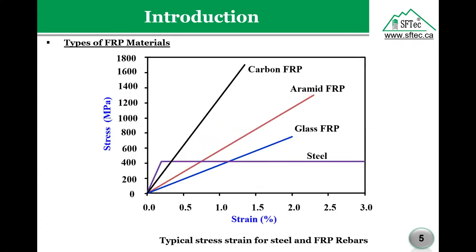The different types of FRP and how they compare to steel — we have glass, aramid, carbon, and basalt, though the three main popular fibers are glass, aramid, and carbon. Comparing them to steel, you will notice two things: glass, being the least strong of the three, already has two to three times better resistance to stress than steel, giving it roughly three times the tensile properties of steel. Also, FRP is linear up to failure, while steel yields and has ductility.